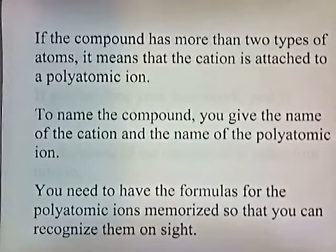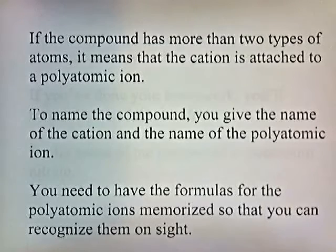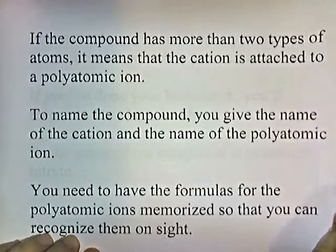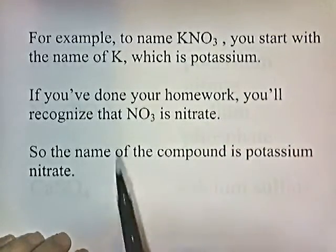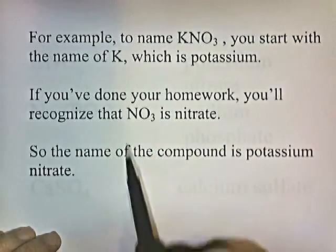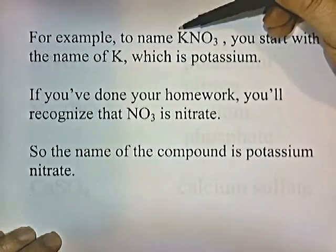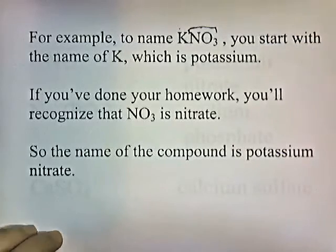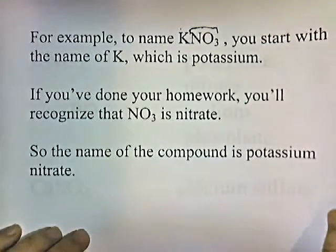If a compound has more than two types of atoms, the cation is attached to a polyatomic ion. To name it, give the name of the cation followed by the name of the polyatomic ion — you need polyatomic ion formulas memorized to recognize them. For example, KNO3 has three types of atoms: K is potassium, and NO3 is nitrate, so the compound is potassium nitrate. Note that NO3 is not on the periodic chart — it is a polyatomic ion you must memorize.